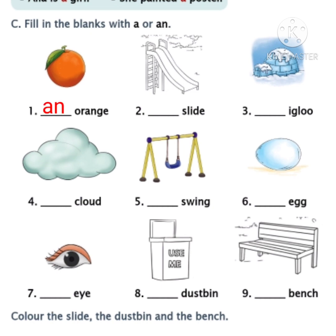Have you finished, children? Now the second one: slide. The word slide starts with S. Is S a vowel or consonant? Yes, S is a consonant, so we must write A in the second blank. Have you done, children? Now the third one: igloo. The word igloo starts with I. Is I a vowel or consonant? Yes, I is a vowel, so we must write AN in the third blank. Write AN in the third blank, children.